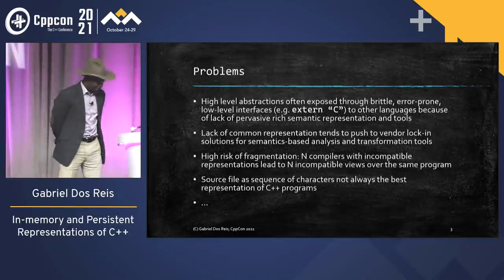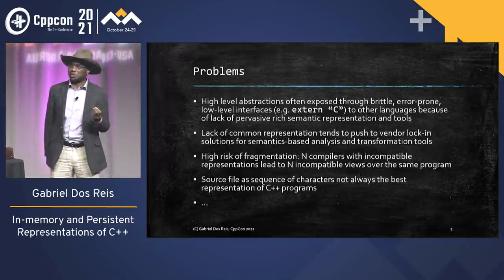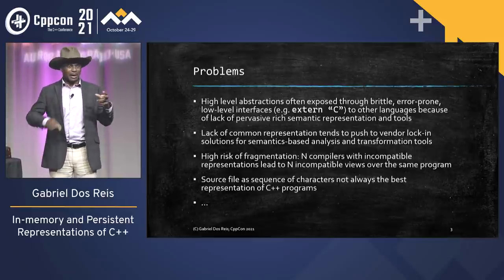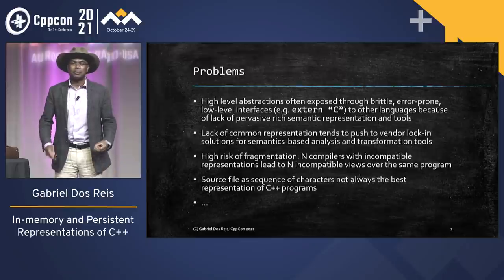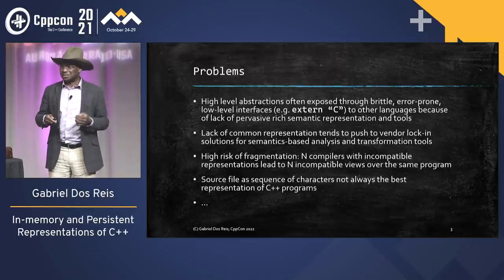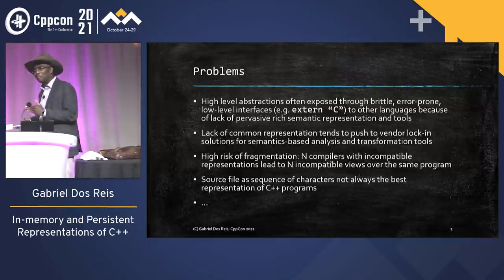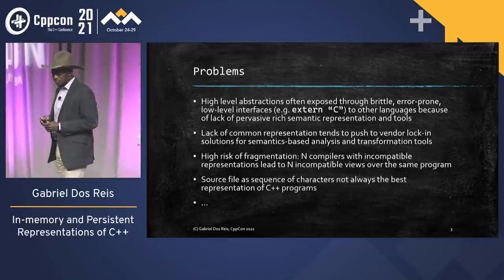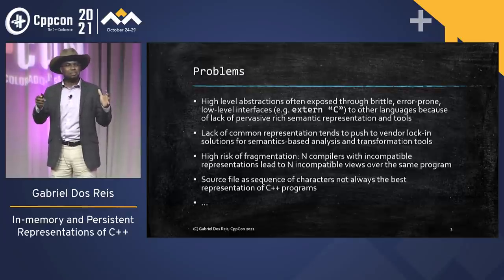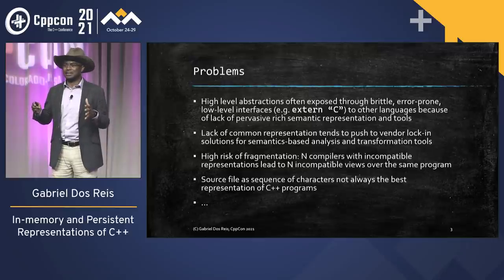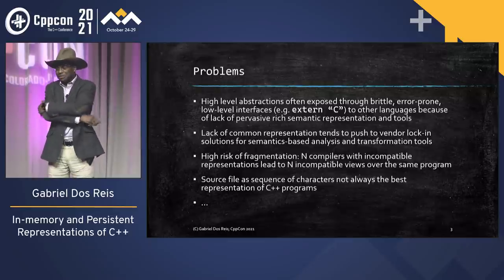The problem is that today we use C++ as the language of choice to build infrastructures. We have high-level abstractions, yet when we have to communicate with a different language, a descriptive language, or some other components, we expose these abstractions through the lowest levels of the language. That's just insane. We can do better, and we should. The lack of widespread abstractions in our representation of C++ tends to push some programmers who really need this facility to lock themselves into vendor extensions, locking them away from the rest of the community.